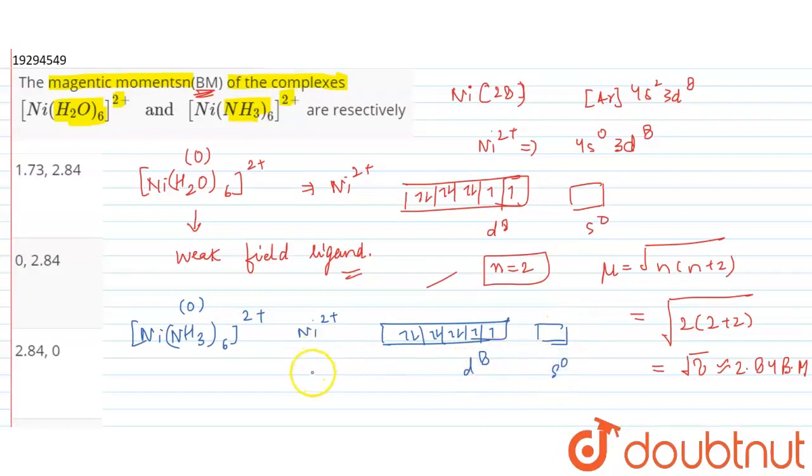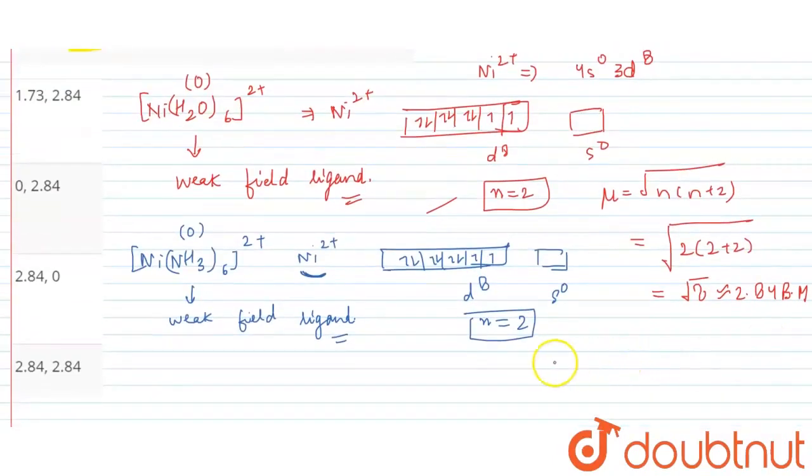D8 S0. Now because NH3 is attached with nickel 2 plus, NH3 is not a strong field ligand. It also acts as a weak field ligand. Now if it's acting as a weak field ligand, then what will happen? Pairing will not occur. If pairing does not occur, n equals 2, so this is what is 2.84 Bohr magneton.